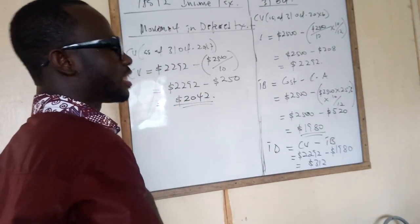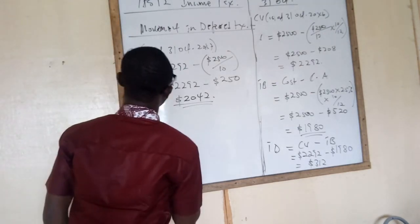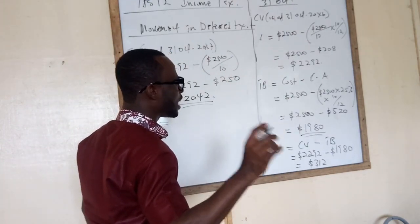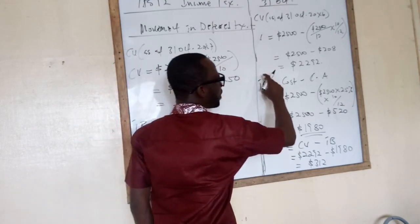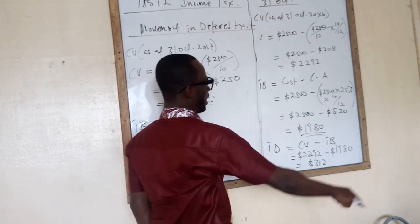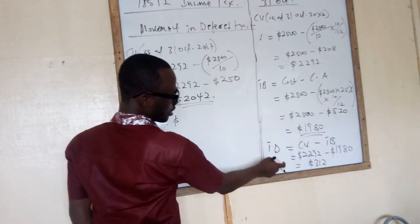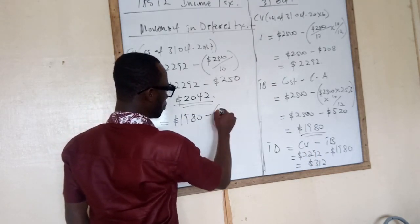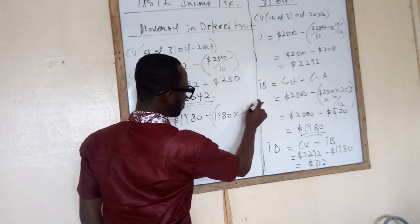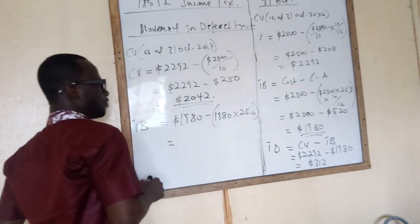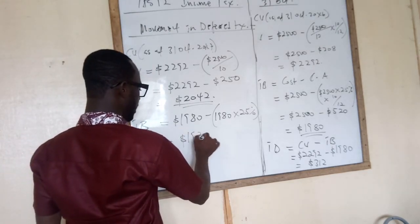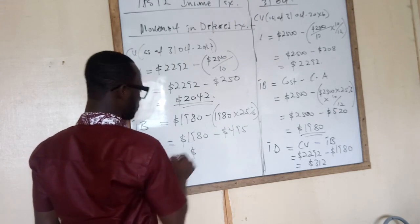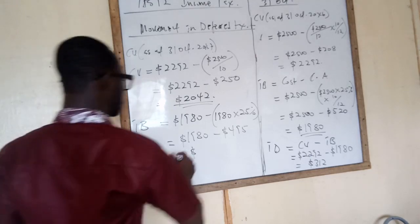But then we need the tax base of the asset. To get the tax base, you have to be careful. The examiner said that the capital allowance is on a reducing balance basis. Hence, the tax base is going to be the prior tax base subtracted. That is 1980 minus 1980 times 25%, which gives us 1980 minus 495, so the new tax base is 1485.